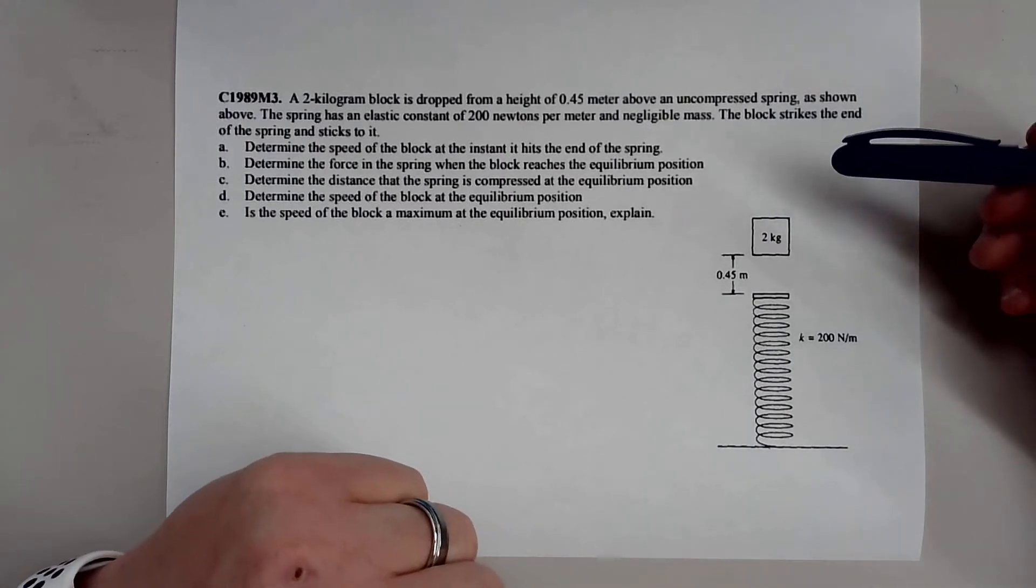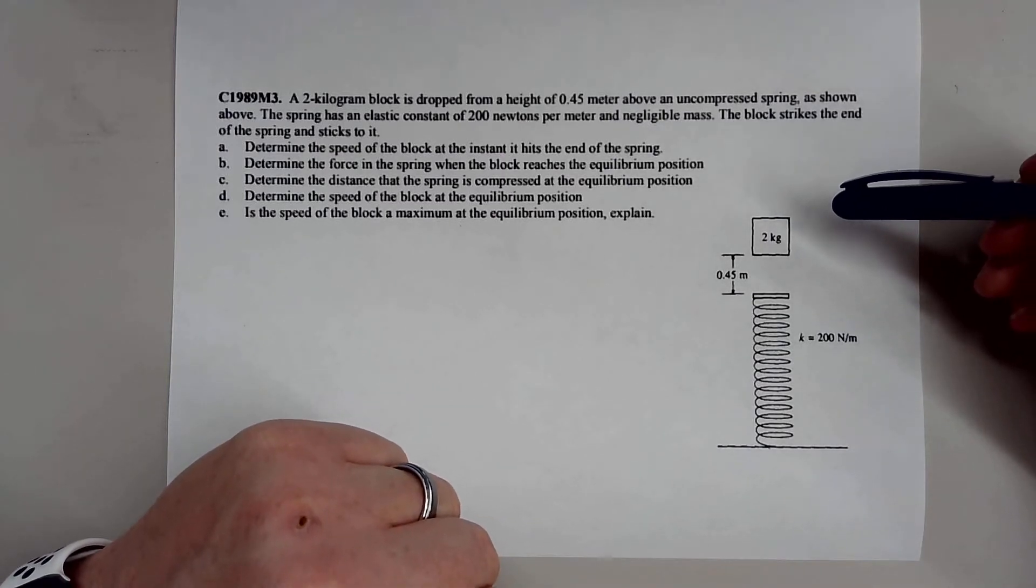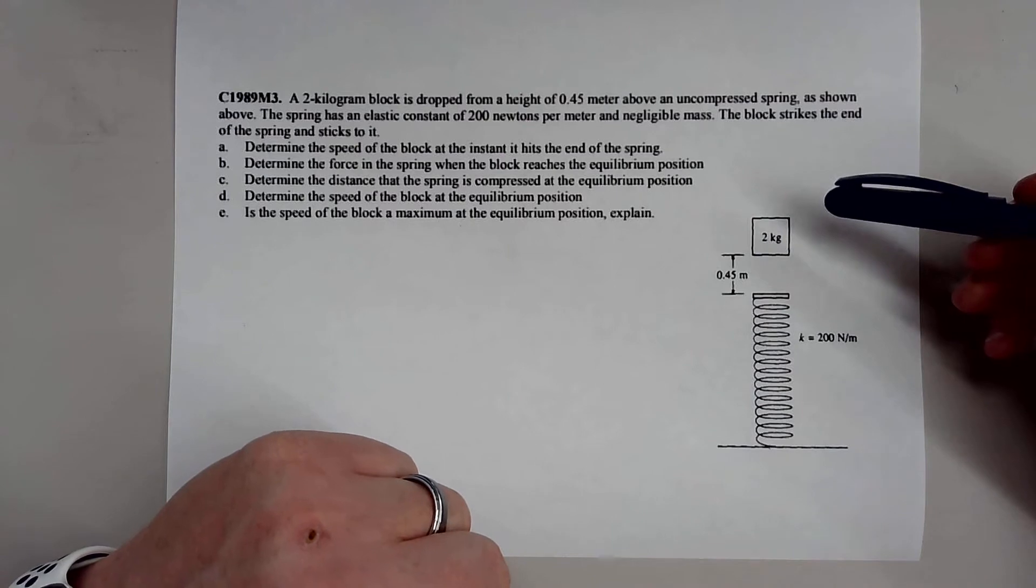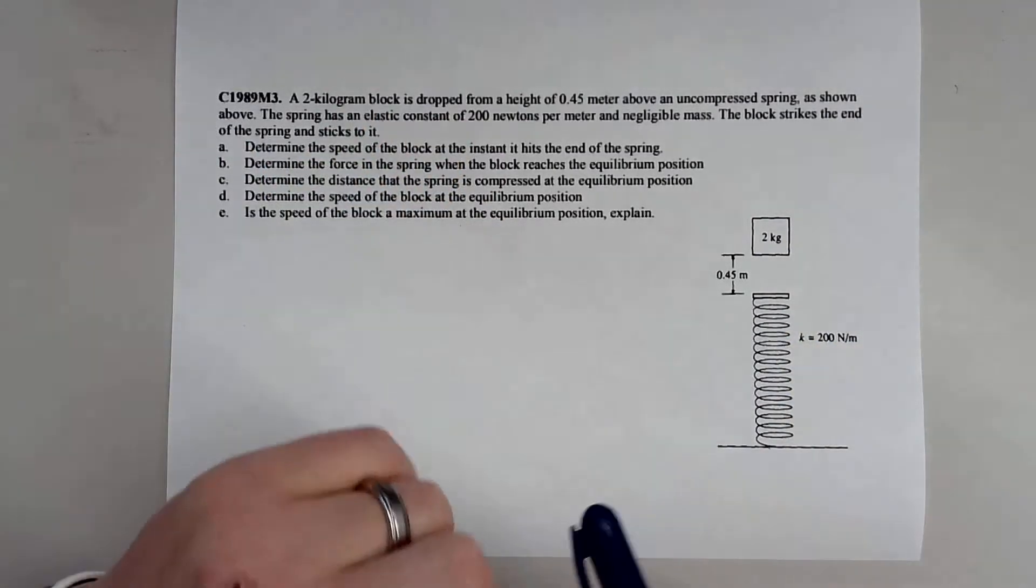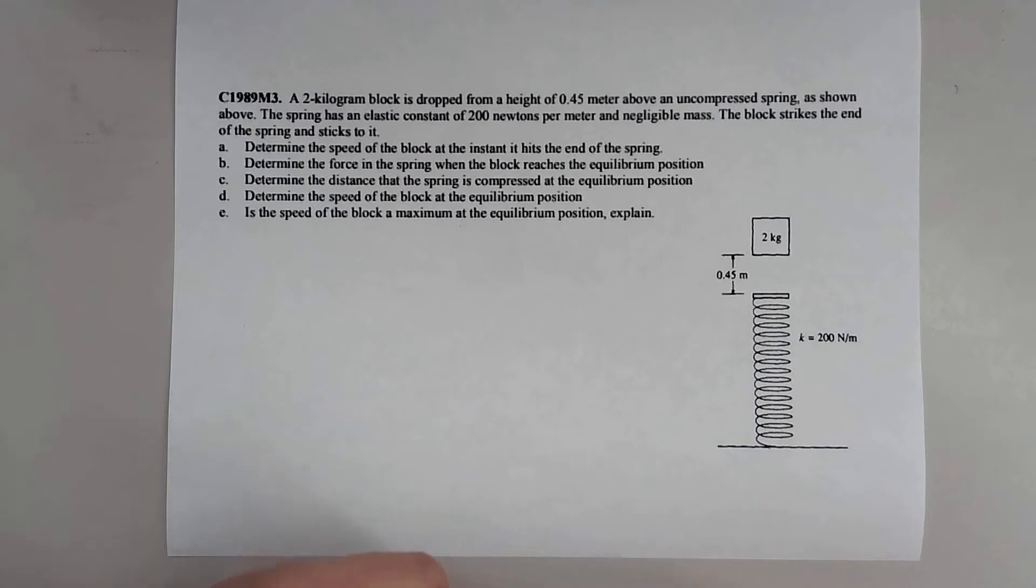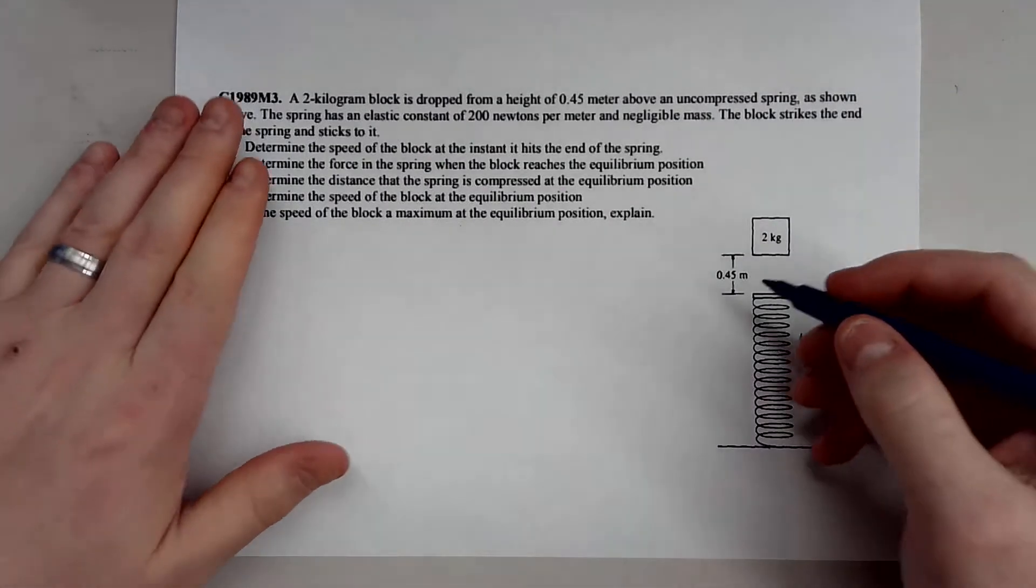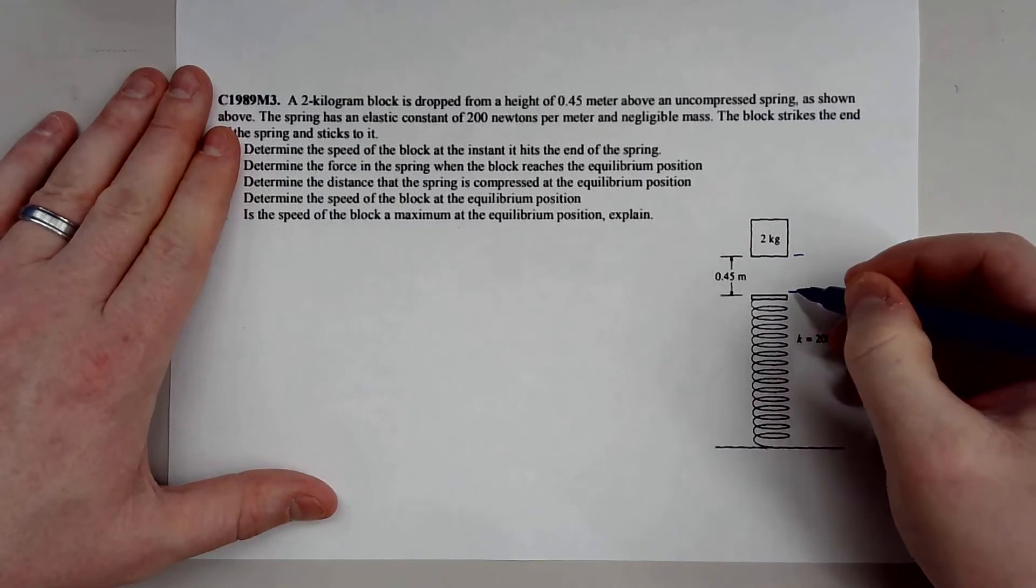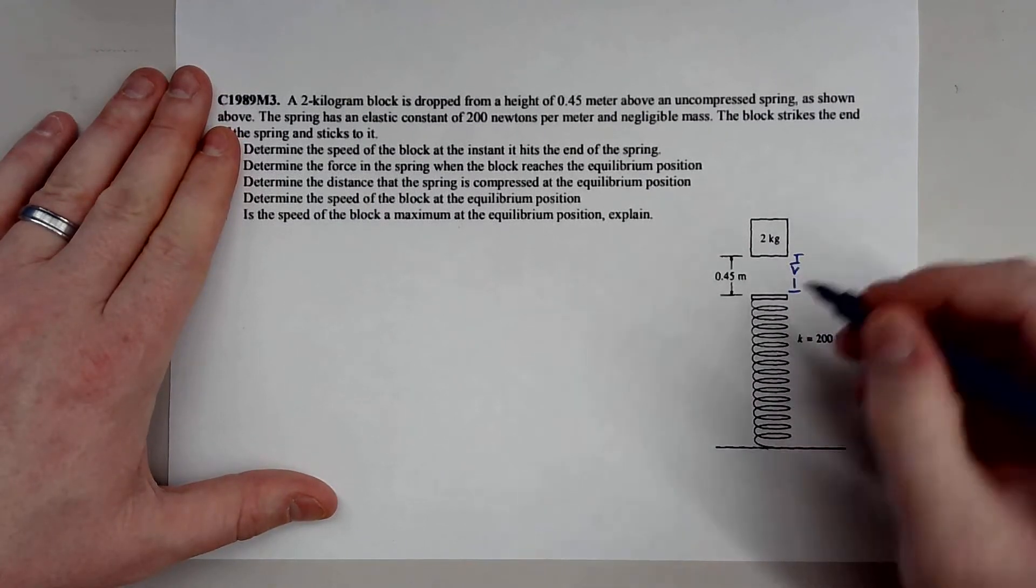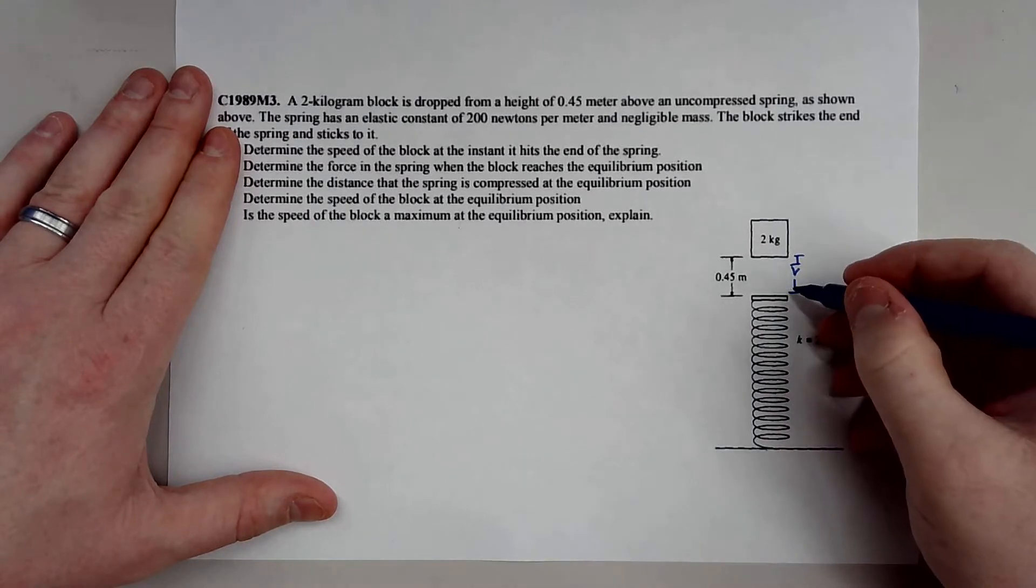Okay, so a 2 kilogram block has dropped from a height of 0.45 meters above an uncompressed spring as shown. The spring has a constant of 200 newton meters and this spring is a perfect spring. Mass is negligible. Part A is to determine the speed of the block the instant it hits the end of the spring. So pretty much how fast is this object going right before it hits the spring? So how fast is this block going to go?